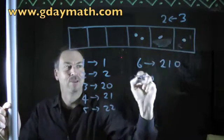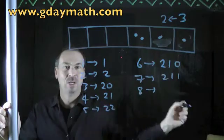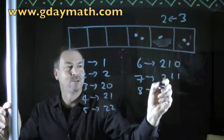Seven, zoom, there's the seventh dot: two, one, one. Eight, zoom, there's the eighth dot: two, one, two.